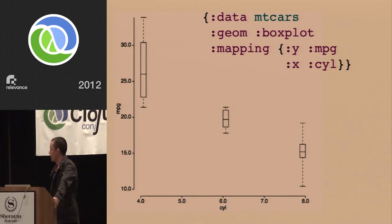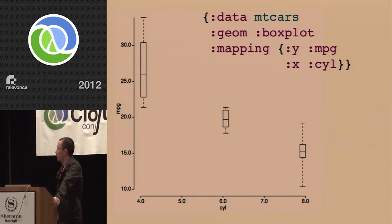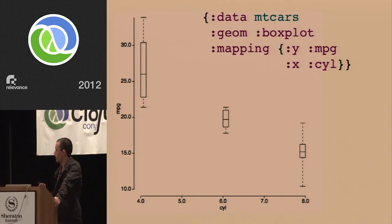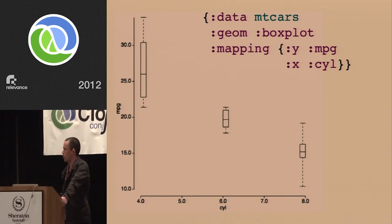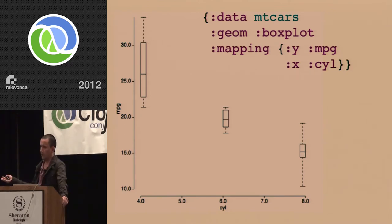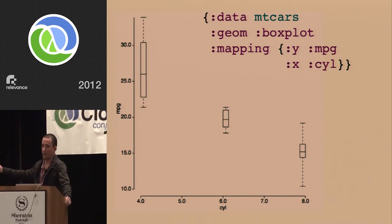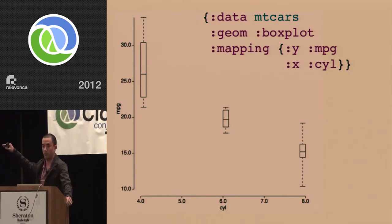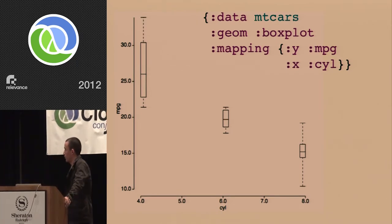One thing I want to point out: the astute among you may note that the short specification seems suspiciously brief for box plots. The aesthetic mappings — x and y — don't seem like quite enough for a box plot. Box plots have a lot more aesthetics: the position of the bottom, the middle, the top of the box, and so on. The actual full specification you would need requires you to group the data by cylinder, calculate quantiles for that group, and then apply the results of that calculation — the Q25 first quartile becomes the lower part of the box, and all that kind of stuff.